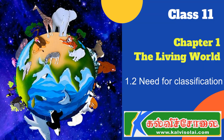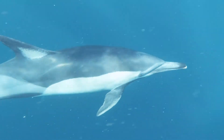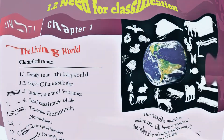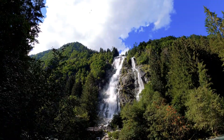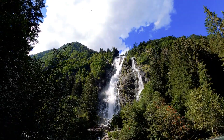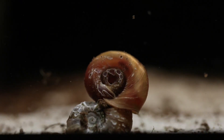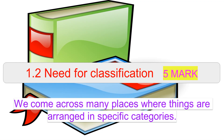Welcome to this class. This is a biology classroom. Today we discuss Plus One Biology, Zoology subject, Unit 1, Chapter 1: The Living World, subheading 1.2 Need for Classification. In this chapter I'll tell you one mark, two mark, three mark, and five mark questions with answers. You can note them in your textbook. Let us go to Chapter 1.2 Need for Classification.